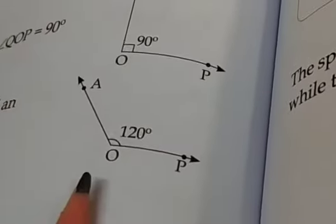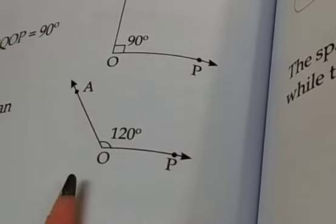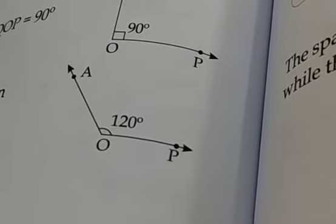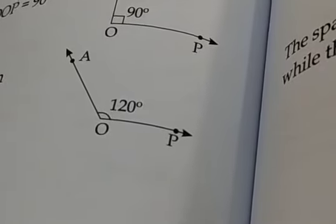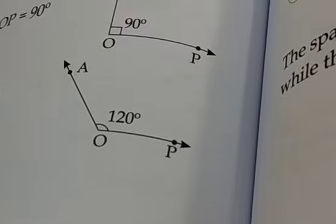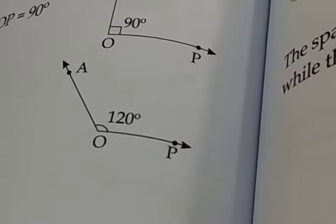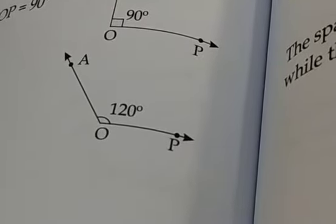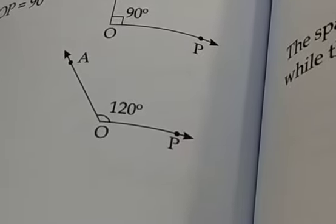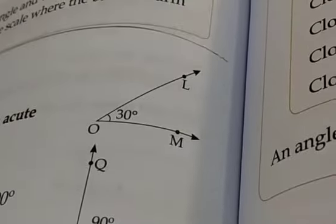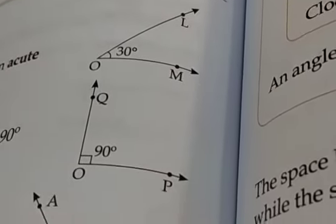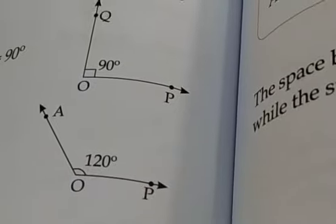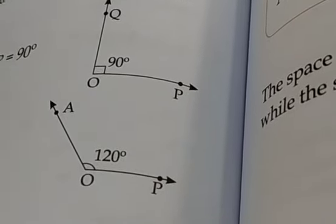Next we have obtuse angle. An angle whose measure lies between 90 and 180 degrees is called an obtuse angle. So to summarize: acute angle is less than 90 degrees, right angle is exactly 90 degrees, and obtuse angle lies between 90 and 180 degrees.